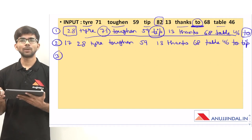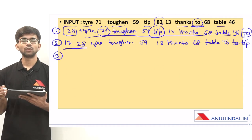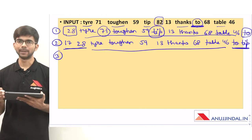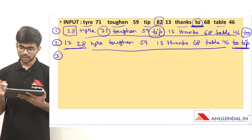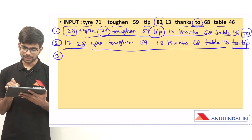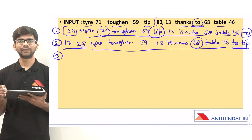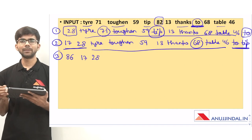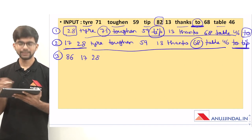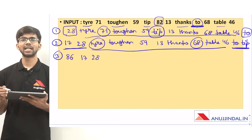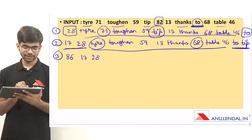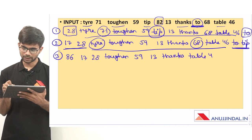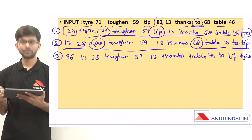Now step 3. We have two numbers and two words placed. From the remaining four numbers, the largest is 68. Reversing 68 gives 86, which moves to the front. From the remaining words, the word with the fewest letters is 'tire' with four letters, so 'tire' moves to the rightmost position. Step 3 is: 86, 17, 28, toughen, 59, 13, thanks, table, 46, 2, tip, tire.